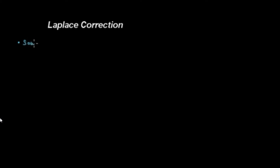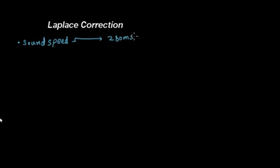Today we have the Laplace correction, and before we begin I want to make sure previous knowledge is in your mind. You have to know the speed of sound which we derived comes out to be 280 meters per second — that is Newton's formula, which is the square root of elastic modulus E over density, or pressure over density.